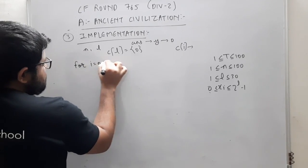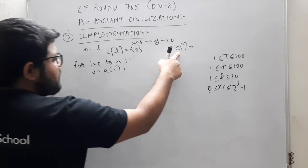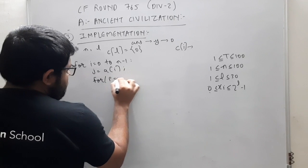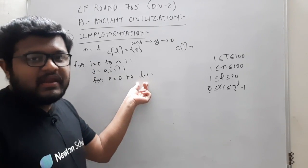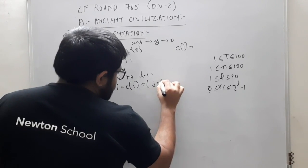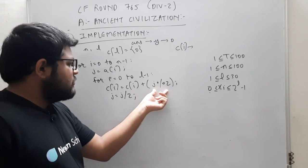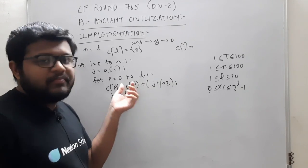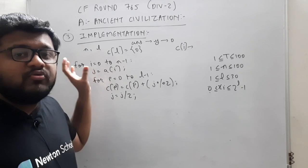Toh ab woh calculate kar lete hain. For I equal to 0 to N minus 1 — J equals to A of I. Ab hame isme sabhi bits kaunsi set hain, woh mark karna hai. For P equals to 0 to L minus 1 — kyunki itni hi length ka word hoga, isse zyada bits nahi ho sakti — count of P equals to count of P plus J modulo 2, aur J equals to J divided by 2. J ko hum har ek baar divide karte jayenge by 2, aur agar last bit set hogi toh count mein 1 add ho jayega. Isse hame pata chal jayega ki Ith bit (P=0 to L-1) kitne numbers mein set hai.